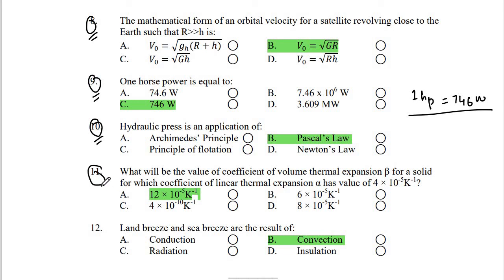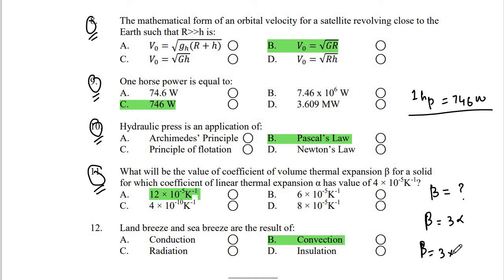Number 11: What will be the value of the coefficient of volume thermal expansion β for a solid whose coefficient of linear expansion α = 4 × 10⁻⁵ K⁻¹? Remember: β = 3α. So β = 3 × 4 × 10⁻⁵ = 12 × 10⁻⁵ K⁻¹. Option A is the right answer.